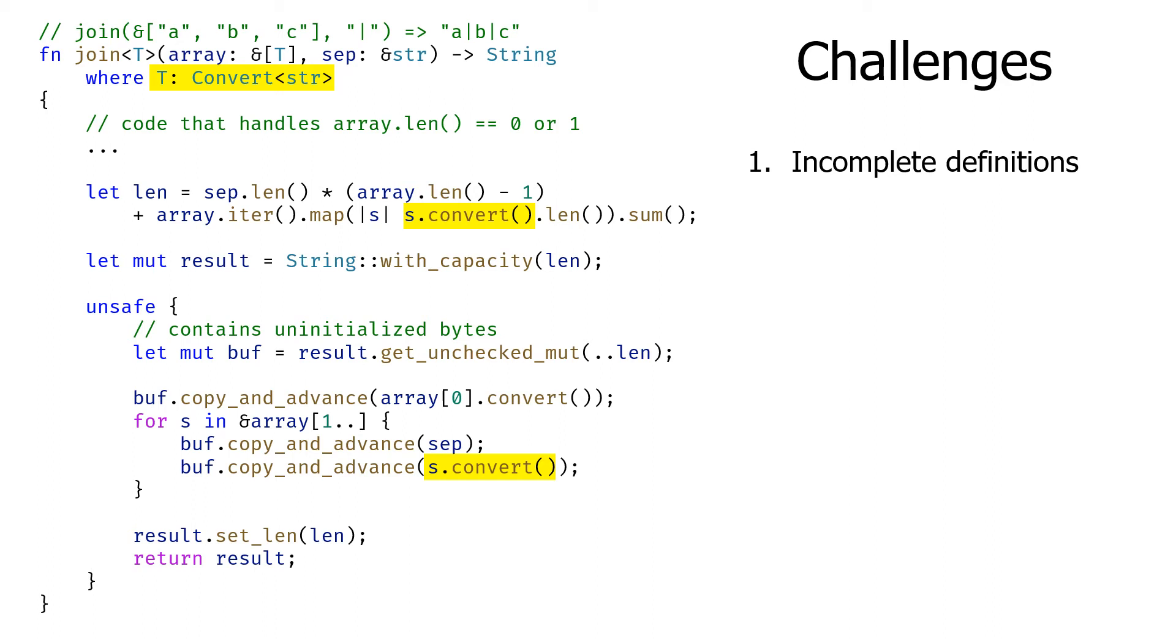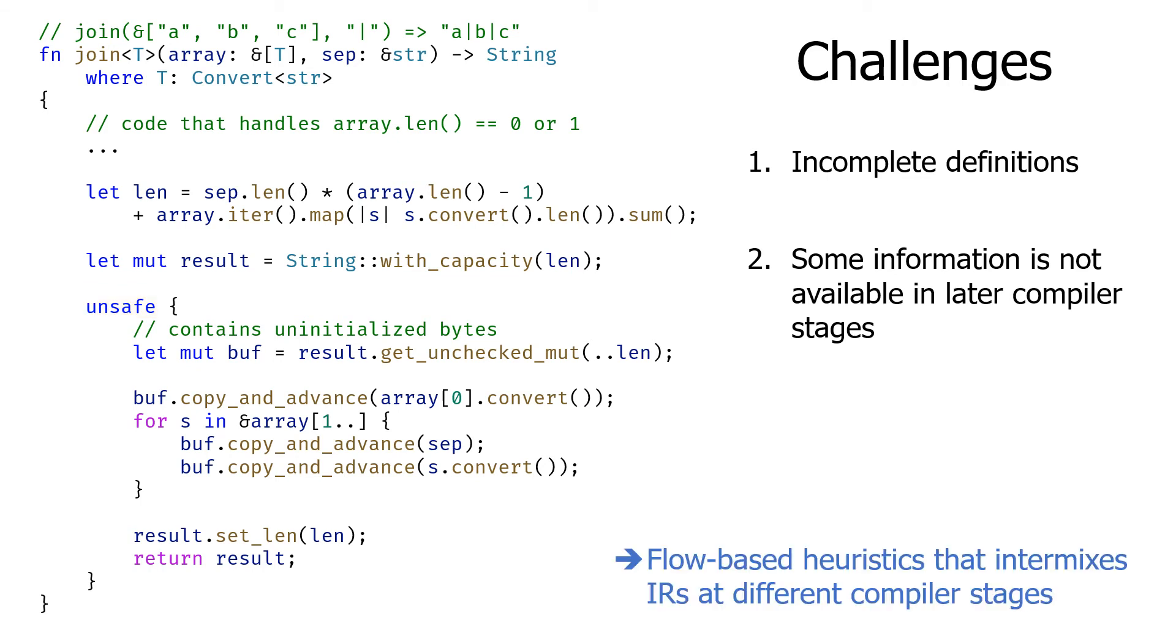The second difficulty is that some information is not available in later compiler stages. For instance, safety of types are only used at type checking stage and discarded during compilation. Such information does not exist in later compiler stages such as LLVM IR. Our solution to these problems is a flow-based heuristics that intermixes IRs at different compiler stages.